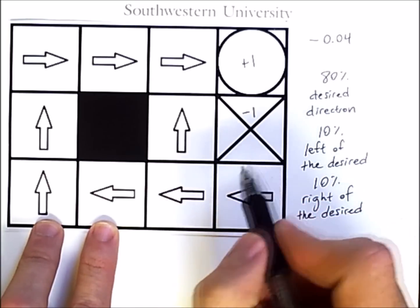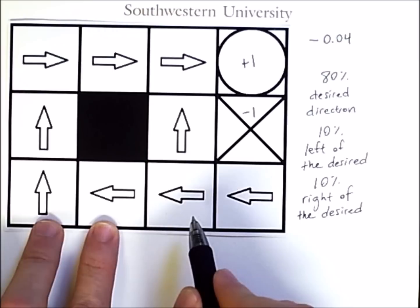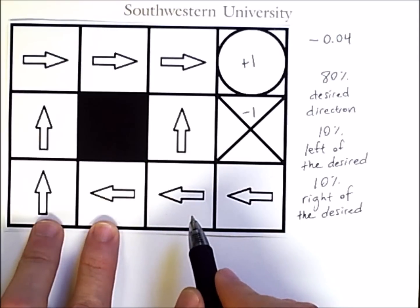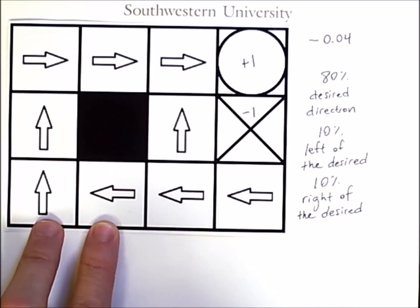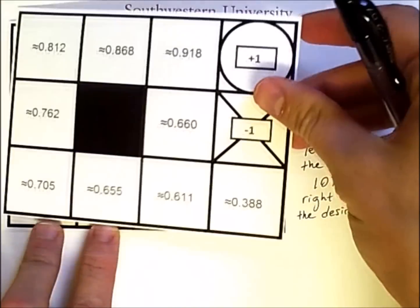Now, if you consider this policy and then want to find out the expected reward the agent will receive from each state, if it follows this policy, then you get these results here.